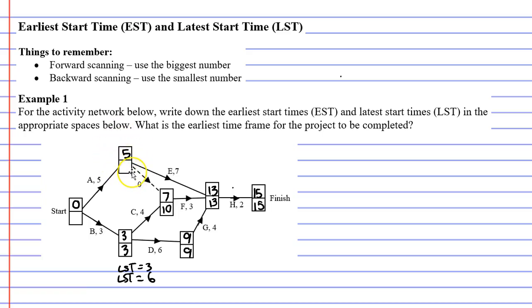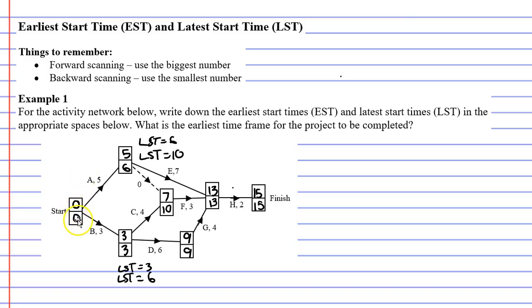For the next vertex there are two paths: 13 minus 7 gives 6, and 10 minus 0 gives 10. We use the smallest number, so 6. Finally, at the start vertex: 6 minus 5 gives 1, and 3 minus 3 gives 0 — we use the smallest number, which is 0. You'll always find that the start vertex has 0 for both the earliest and latest start time. The start vertex and the finish vertex will always have an earliest and latest start time that is the same.